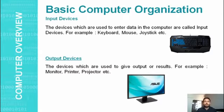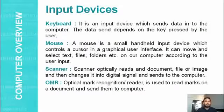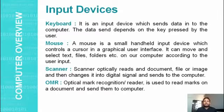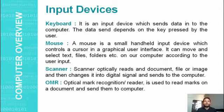Let's explain some input devices. Keyboard is an input device which sends data to the computer; the data is sent with the help of key pressing. Next is the mouse — a mouse is a small handheld input device used to send data with the help of clicks. It has two buttons: the right click and the left click, and one scroll button used to scroll the window.